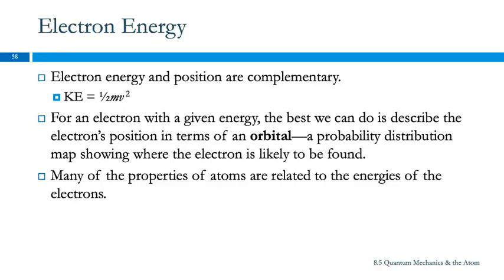The electron energy and its position are also complementary, because the energy depends on the velocity. The kinetic energy of an object is one-half mass times the velocity squared. So if we can know either the position or the velocity, then we could know either the position or the energy, because the energy depends on the velocity.